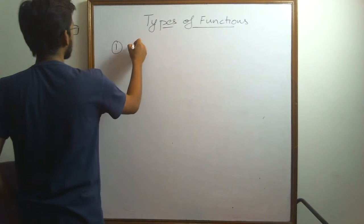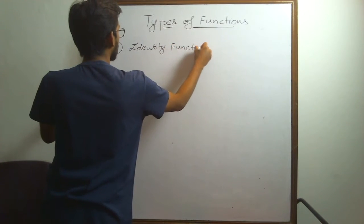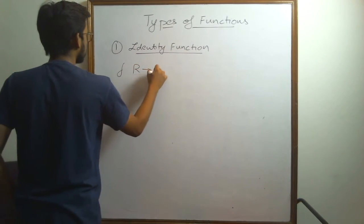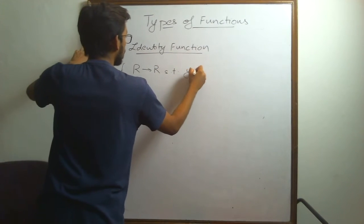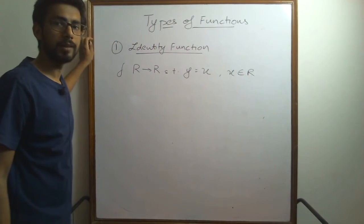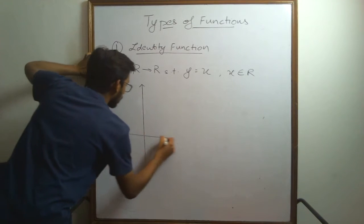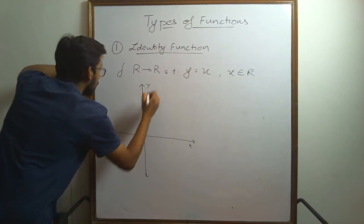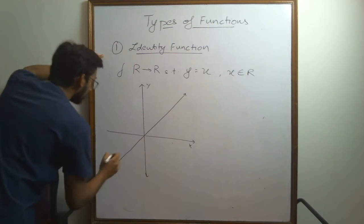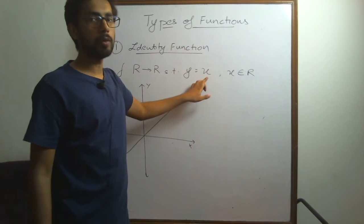The first type of function we are looking at is the identity function. If I define a function f from the set R to R such that y is equal to x, where x belongs to the set of real numbers, this type of function is known as the identity function. The graph of this function is a straight line passing through the origin and extending both sides.